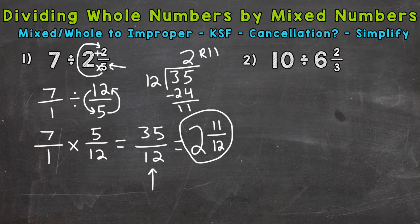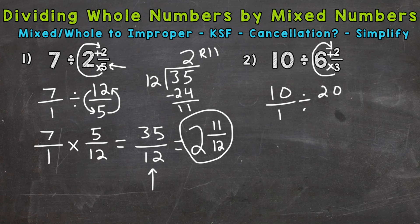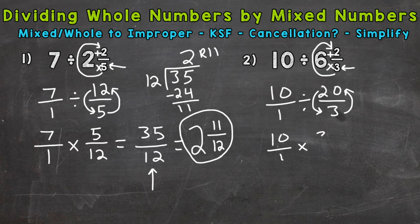On to number 2, where we have 10 divided by 6 and 2 thirds. First, we convert our mixed number and whole number to improper fractions. The 10, being a whole number, we put over 1. For the mixed number, we start at the bottom, multiply, then add: 3 times 6 is 18, plus 2 is 20. We keep our denominator of 3 the same. So now we're ready to Keep, Switch, Flip — always keep your first fraction, switch to multiplication, and then flip the second fraction, giving us 3 over 20.